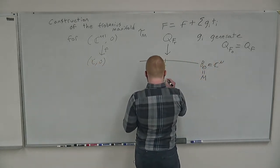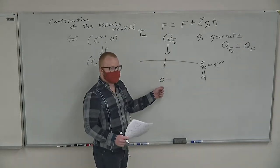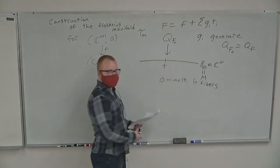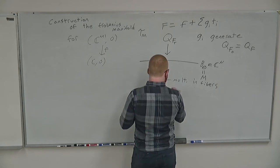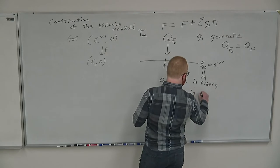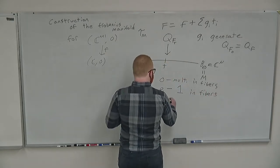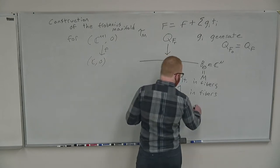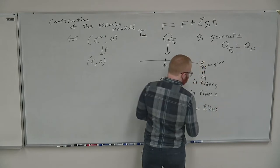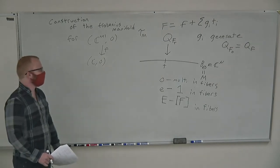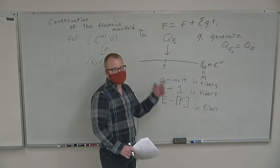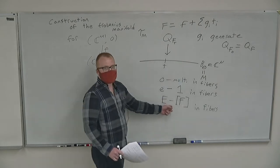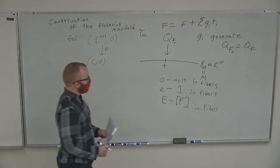The Frobenius manifold structure corresponds to: we always have this tensor, this multiplication — it's just multiplication in the fibers, multiplication of functions. A Frobenius manifold always comes with an identity, and this identity for us is one in the fibers. A Frobenius manifold always comes with an Euler field, and for us this Euler field is F — really the class of F in the fibers. Note that at least in the zero fiber, for a quasi-homogeneous singularity, this vanishes. So for quasi-homogeneous singularities, at least on the zero fiber, this Euler field will vanish.